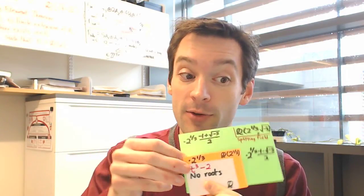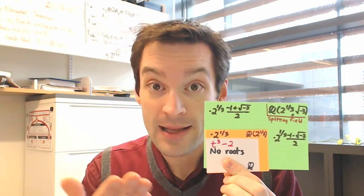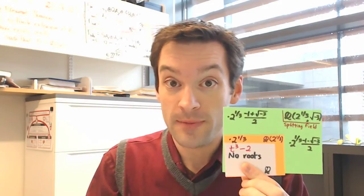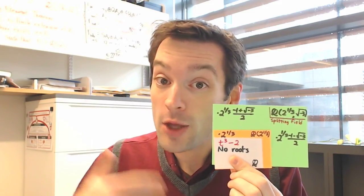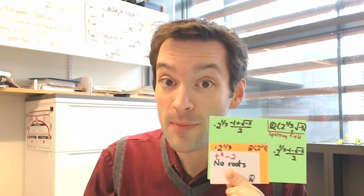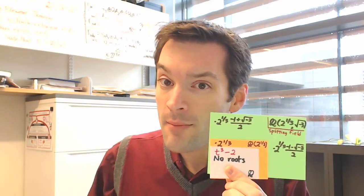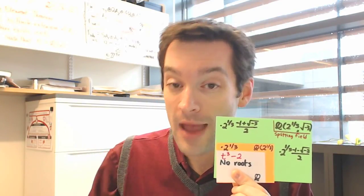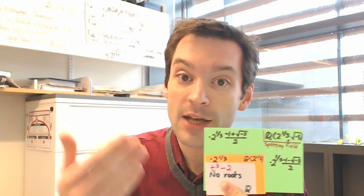We can do that by adding in the square root of the real number negative 3. And if I add both of those things into my field, then I can locate all three of the roots of t cubed minus 2, and that makes this a splitting field for the polynomial t cubed minus 2. But we had to do this in two steps: we had to adjoin the real cubed root of 2 and we had to adjoin something that was not real in order to make this polynomial split. In this video, we're going to look more closely at that question of non-reality.